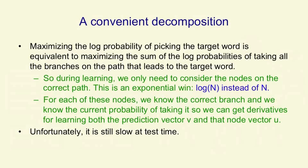For each of those nodes, we know the correct branch because we know what the next word is. We know the current probability of taking that branch by comparing the prediction vector with the learned vector at the node, and so we can get derivatives for learning both the prediction vector v and the learned vector at that node, u. This makes the training hundreds of times faster. Unfortunately, it's still slow at test time. At test time, you need to know the probabilities of many words to help the speech recognizer, and so you can't just consider one path.